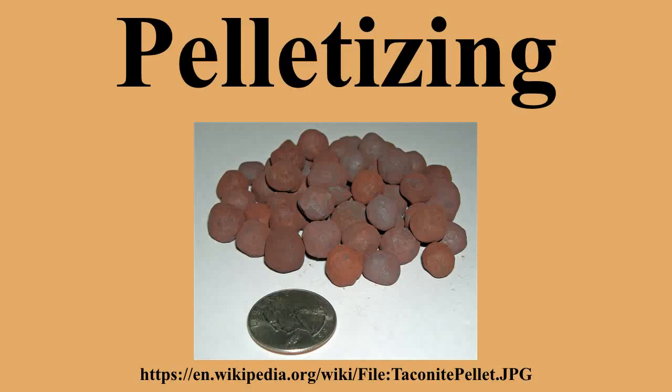The process of pelletizing combines mixing of the raw material, forming the pellet, and thermal treatment — baking the soft raw pellet to hard spheres. The raw material is rolled into a ball, then fired in a kiln to sinter the particles into a hard sphere.